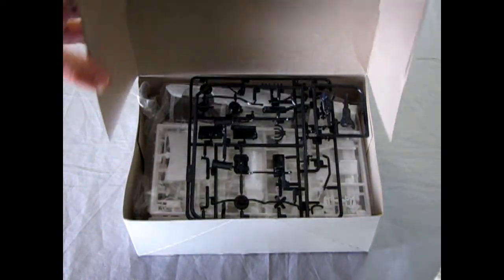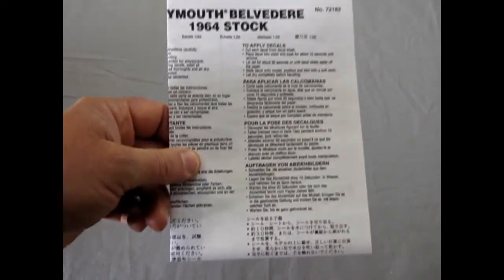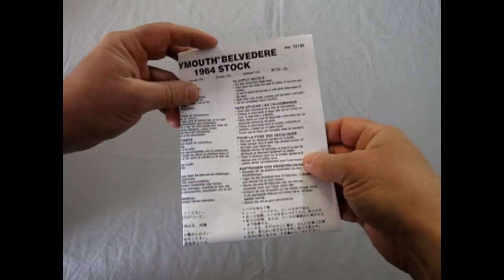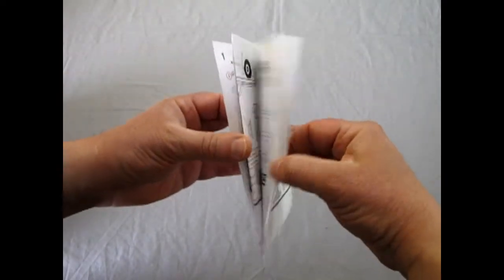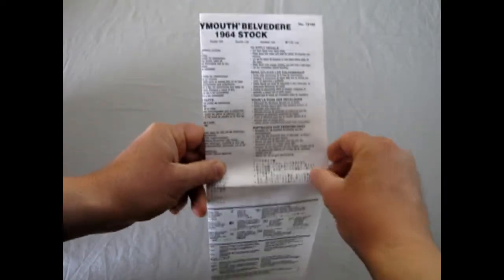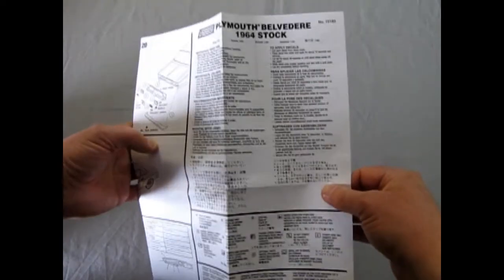Alright, so I'm going to just close this and move the parts out of the way as we look at this instruction sheet. I'll just zoom back. Zoom back my bonnie to me. I went there. Okay, so the instruction sheet again, like typical Lindberg, doesn't have much in the front here. Very basic.